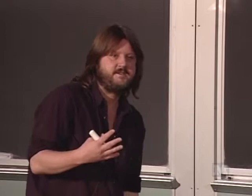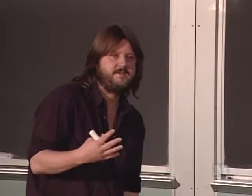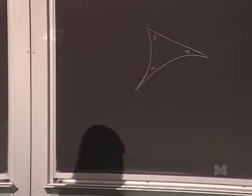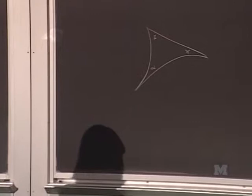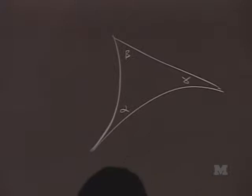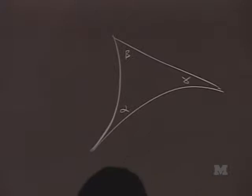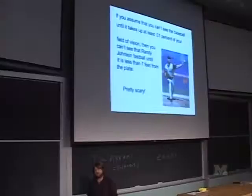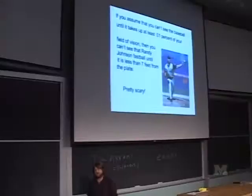One of the other defining features of non-Euclidean geometry is that if you take a triangle in non-Euclidean geometry with angles alpha, beta, and gamma, the area of the triangle is pi minus (alpha plus beta plus gamma). This is a defining feature of negatively curved spaces. One thing you might notice is that the area of a triangle is always less than pi, no matter how big you make the triangle.